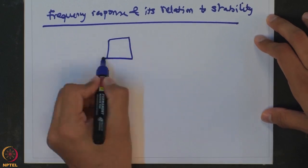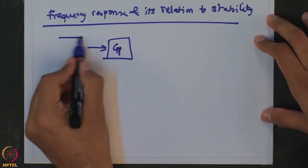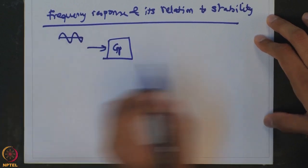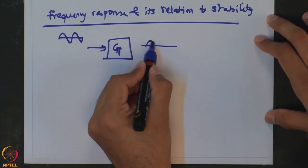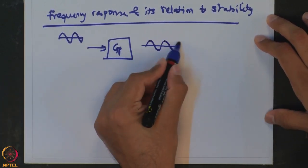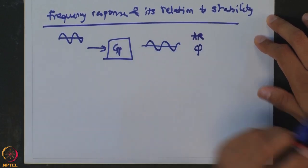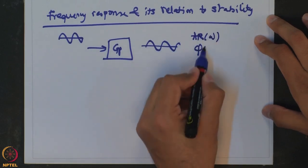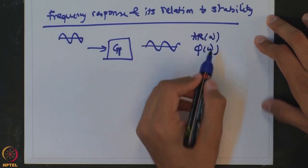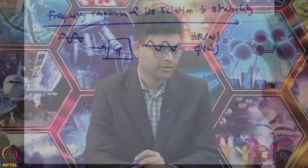We have seen that frequency response is: if you have a process and subject it to a sinusoid, then your output will also be a sinusoid with a different amplitude ratio and a different phase than the input. When you capture this as a function of omega — the frequency of sinusoidal oscillation — you get the frequency response.